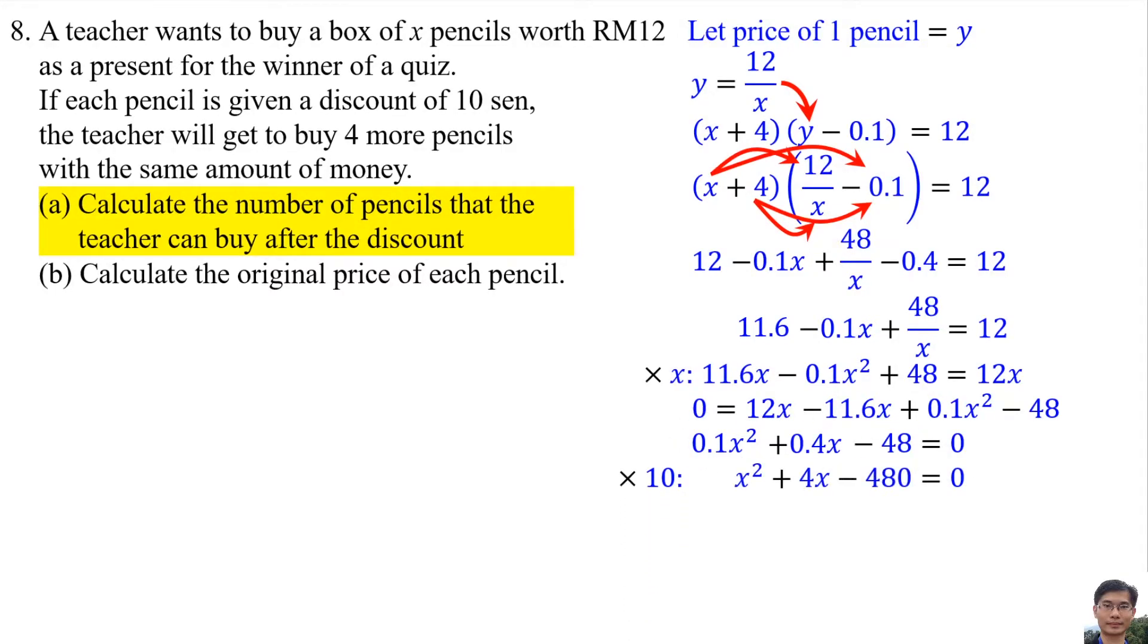Convert both coefficients to integers by multiplying all three terms by 10. Then solve the quadratic equation. So X is 20. The number of pencils that the teacher can buy after the discount is X plus 4. X plus 4 equals 20 plus 4 equals 24.